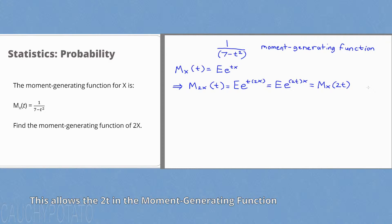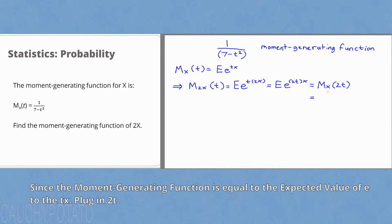Just a little manipulation was needed to get the moment generating function of 2x from x. So M_x(2t) is equal to 1 over 7 minus 2t squared, instead of t, equals 1 over 7 minus 4t squared.